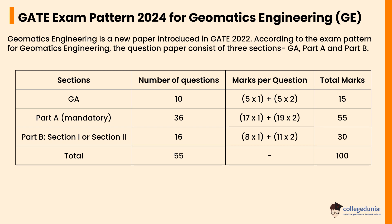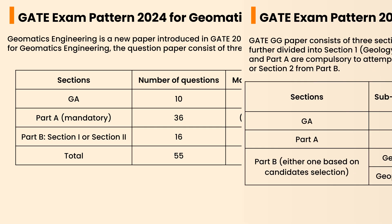Let's check the GATE exam pattern 2024 for Geomatics Engineering, a new paper introduced in GATE 2022. The question paper consists of three sections: General Aptitude, Part A, and Part B. General Aptitude includes 10 questions for 15 marks (five one-mark and five two-mark). Part A includes 36 questions for 55 marks (17 one-mark and 19 two-mark). Part B includes 16 questions for 30 marks (8 one-mark and 11 two-mark questions).